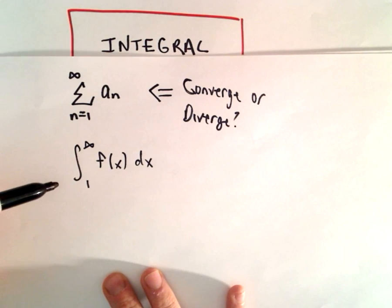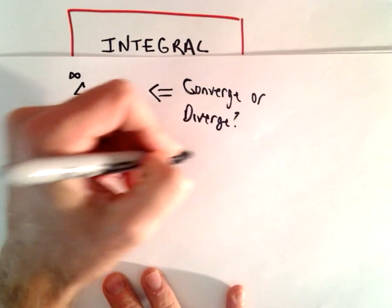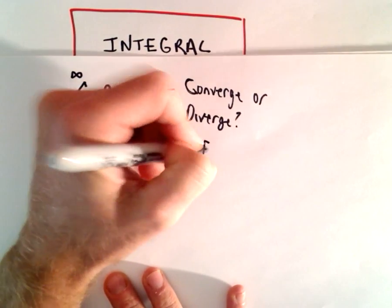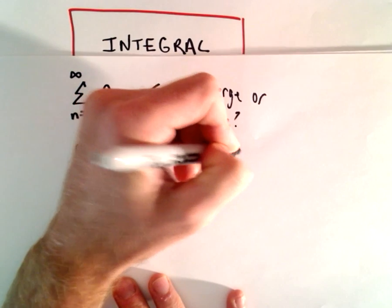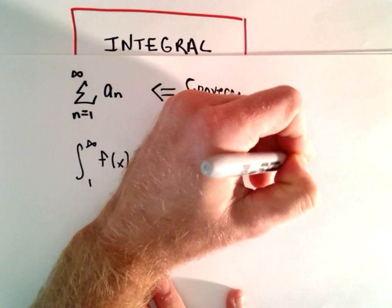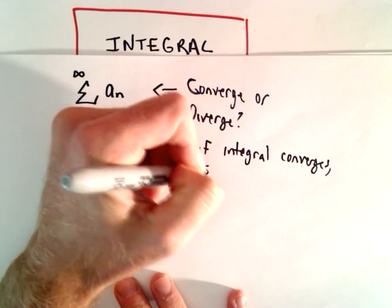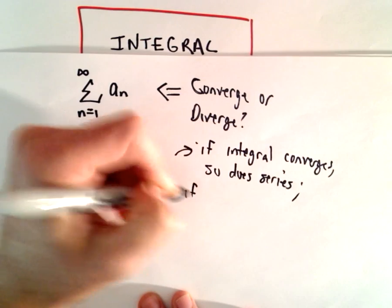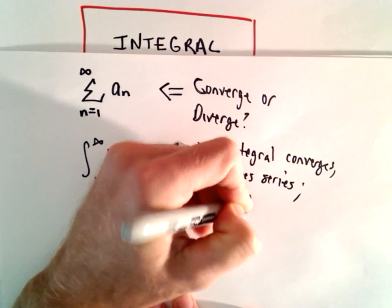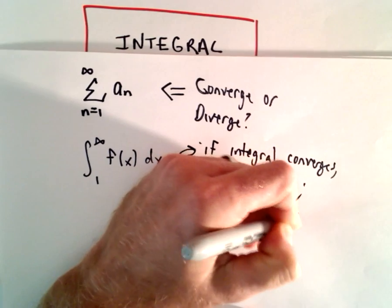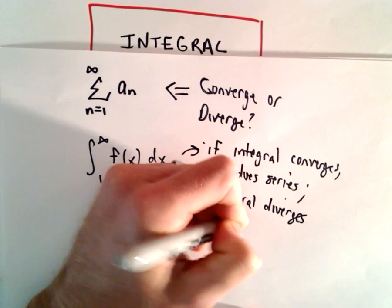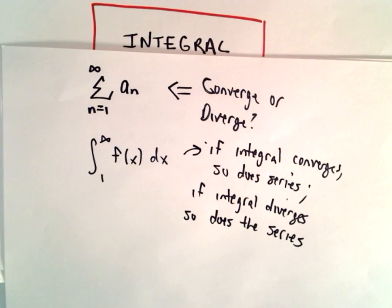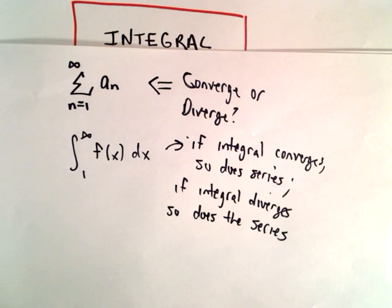The integral test says we can look at a corresponding improper integral, where the function is based on the terms in the series. It says if the integral converges, so does the series; and if the integral diverges, so does the series. I'm not going to do any rigorous justification, but the argument would be exactly the same.